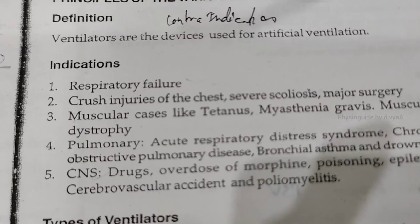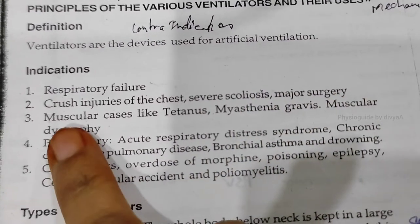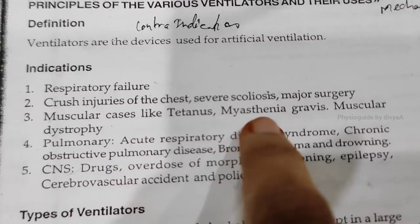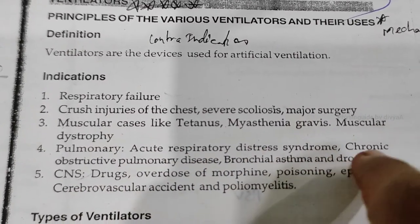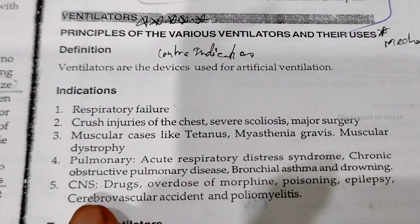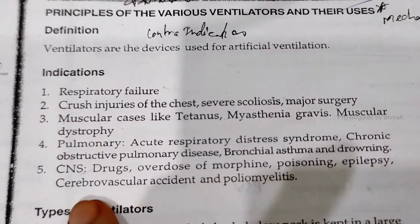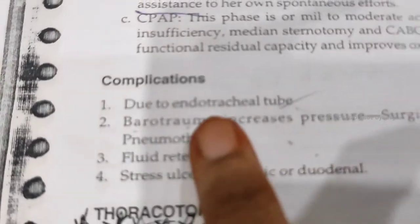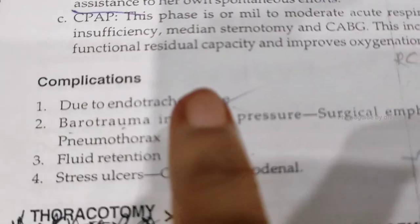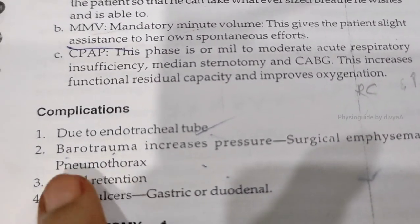Indications for ventilation include: respiratory failure, crush injury, scoliosis, and major surgeries. Complications of ventilation include: endotracheal tube-related issues, fluid retention, stress ulcers, barotrauma, increased pressure, surgical emphysema, and pneumothorax.